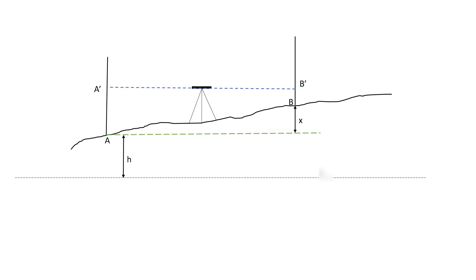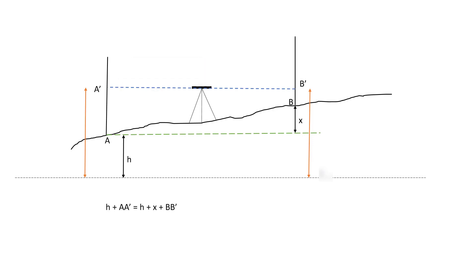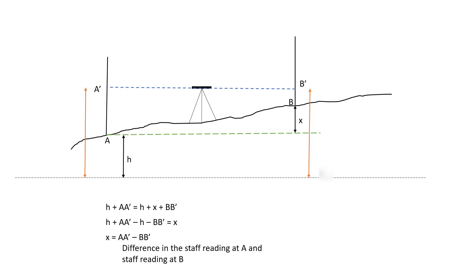To do that, we have to find the difference between these two points, which is x. If we find x, we can add it to the elevation of A and we get the elevation of B. The common link between these two points is our horizontal line of sight. By computing the left and right parts of the reading and equating them, we get a relation which, on further solving, gives x equal to the staff reading at point A minus the staff reading at point B.